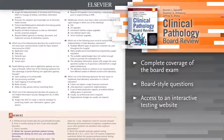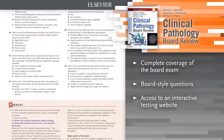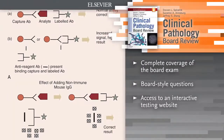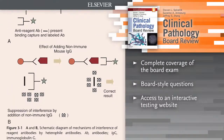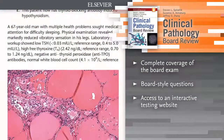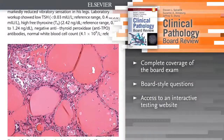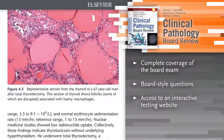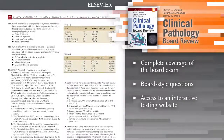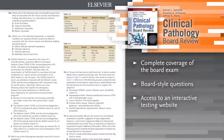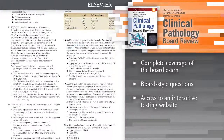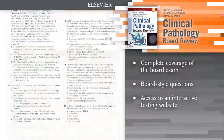Understand all of the major subject areas of clinical pathology tested on the Clinical Pathology Board Exam, including chemistry, hematology, coagulation, microbiology, immunology including HLA testing, transfusion medicine including therapeutic apheresis, cytogenetics, and molecular diagnostics.